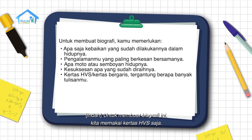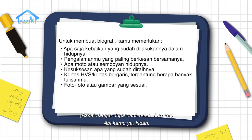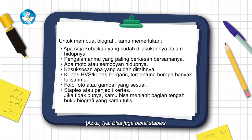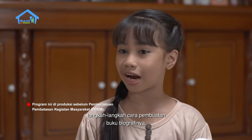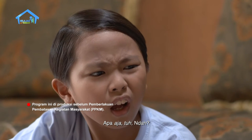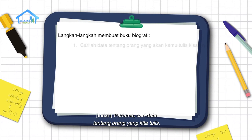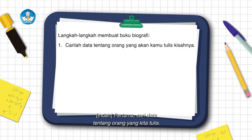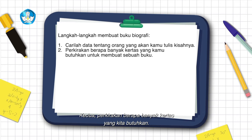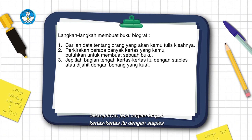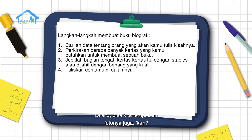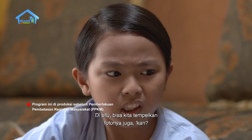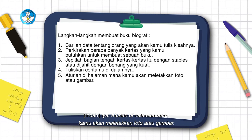Untuk membuat biografi ini, kita memakai kertas HVS saja. Jangan lupa nanti minta foto-foto Abi kamu ya, Andah. Supaya kertasnya tidak berantakan, kita pakai penjepit kertas saja. Bisa juga pakai staples. Aku juga sudah tulis nih langkah-langkah cara pembuatan buku biografinya. Pertama, cari data tentang orang yang kita tulis. Kedua, perkirakan berapa banyak kertas yang kita butuhkan. Selanjutnya, jepit bagian tengah kertas-kertas itu dengan staples atau dijahit dengan benang yang kuat. Lalu, kita tulis ceritanya di dalamnya, dan bisa kita tempelkan fotonya juga.